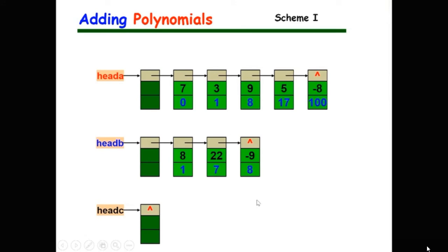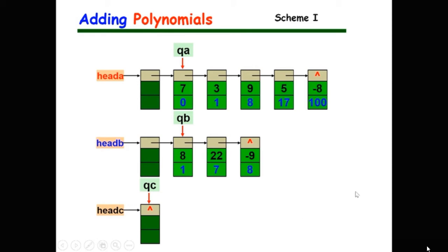For each node in the list, its data field has two items — one for coefficient and one for exponent — appearing in ascending order of exponents. To add two polynomials, the first method is to create a new singly linked list to hold elements in the sum. First, create a header node with its next pointer assigned null, then declare variables pointing to the first node in list A and list B respectively.